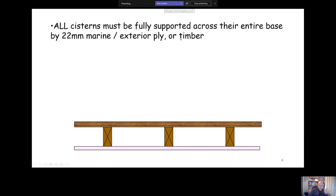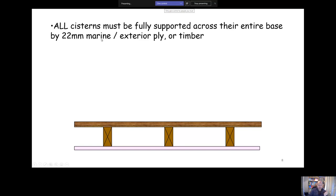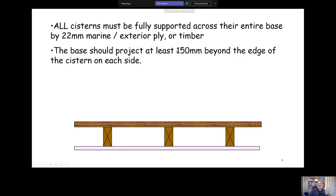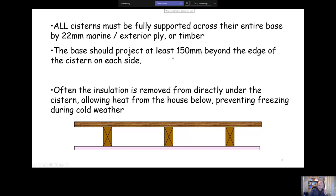All systems, and this is key, all systems must be fully supported across the entire base using something that's going to be resistant to water. That could be marine ply or timber, either is fine. It needs to be fully supported across the entire base plus an extra 150 mil on each side. Sometimes, this isn't a regulatory requirement, you might remove insulation from underneath the system. That's essentially to allow some of the heat from the house below to gently warm the system to prevent freezing during the winter.